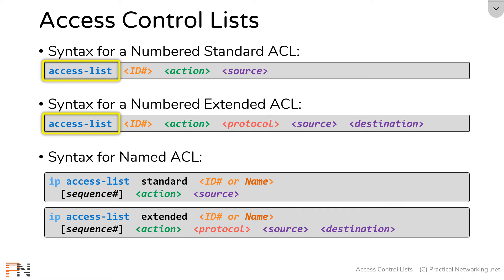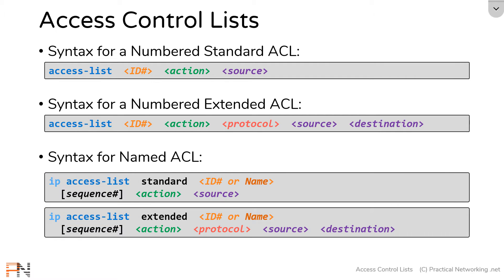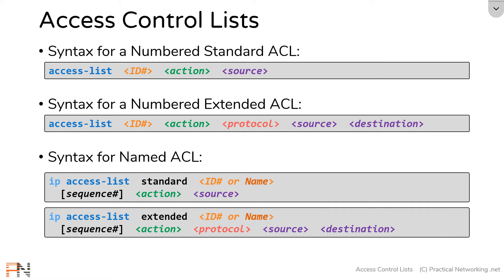The command is also a little different. To configure a numbered access list, you use the command 'access-list'. To configure a named access list, you use the command 'ip access-list'. But it works the same way — the command is just a little bit different. So between numbered access list and named access list, the syntax is largely the same.